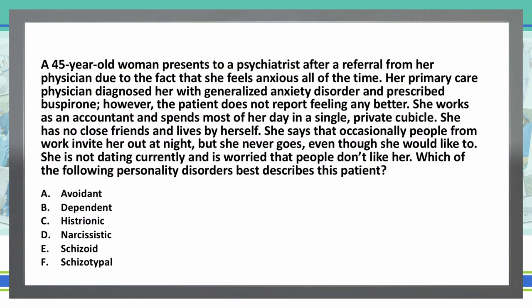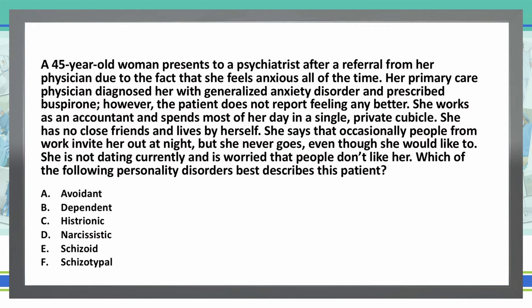We have: A) avoidant, B) dependent, C) histrionic, D) narcissistic, E) schizoid, or F) schizotypal. Take a minute, read the question and answer choices again, come up with your answer and write it in the comment box below.